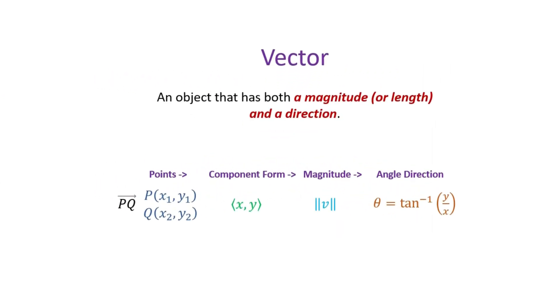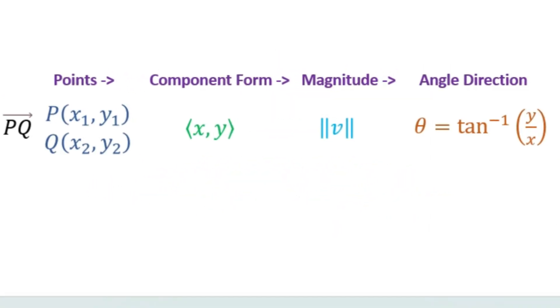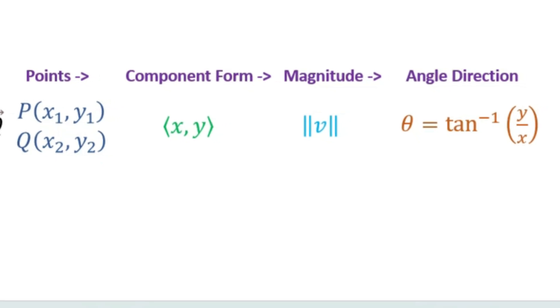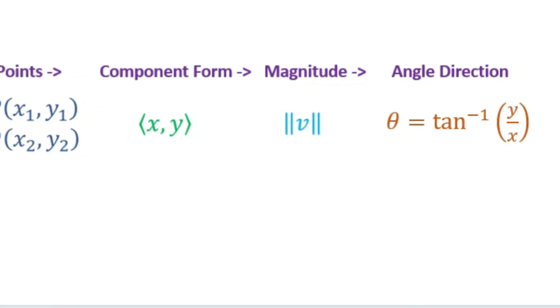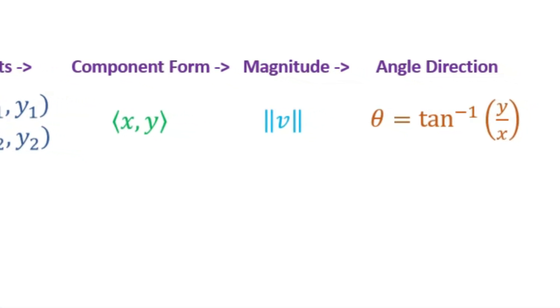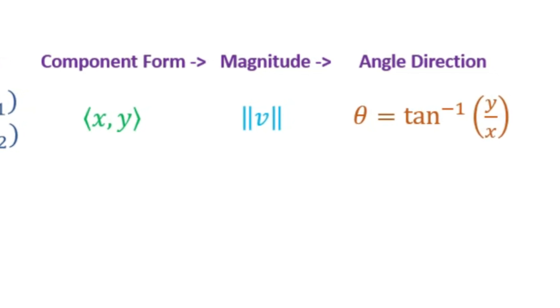We're going to start with points and do the components of a vector, which are the x and y coordinates. Then we will determine the magnitude and the angle direction.